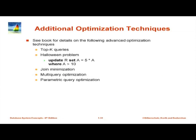To wrap up optimization: there are other optimization techniques in the textbook including top-K queries, multi-query optimization, and parametric query optimization. Multi-query optimization was the subject of my first PhD student's thesis, and parametric query optimization was my second PhD student Arvind Hulgeri's work — two nice pieces of work that came out of IIT Bombay on these topics.